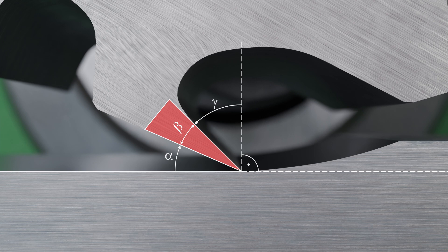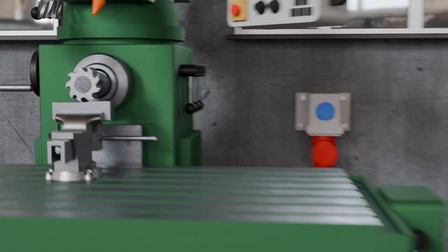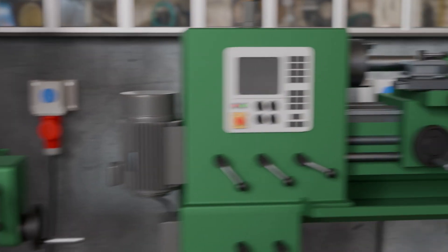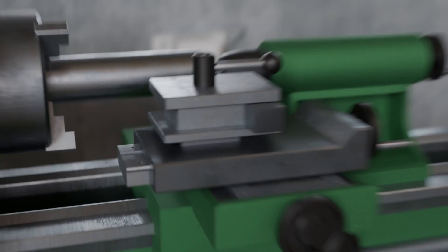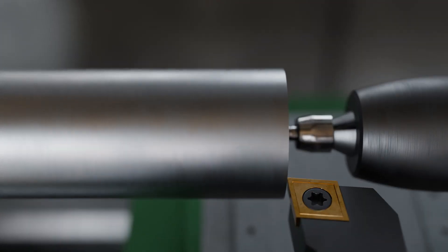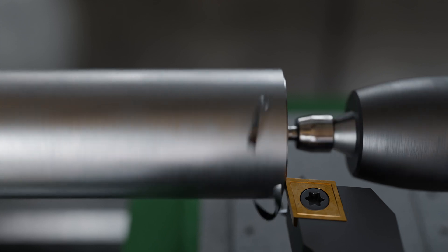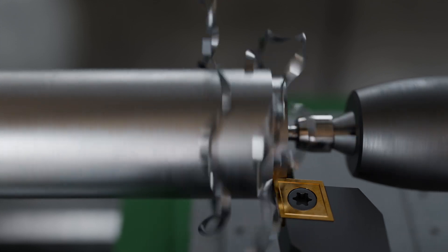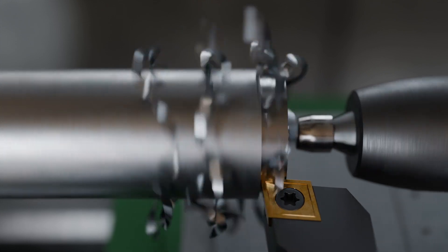With a large rake angle, the chip is less strongly deflected, and in continuous cutting processes such as turning, long chips are usually produced. These are referred to as flow chips.